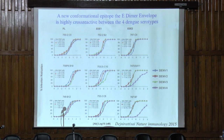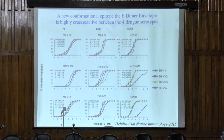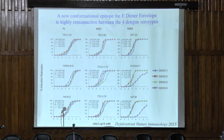The interesting thing about these antibodies — the ones that react against only the intact virus — is that not only were they very potent at neutralizing the virus, they were very cross-reactive between all four virus serotypes. This is quite unusual for dengue antibodies. They were pan-reactive against all four serotypes, both by binding and neutralization.